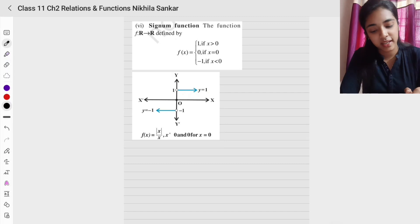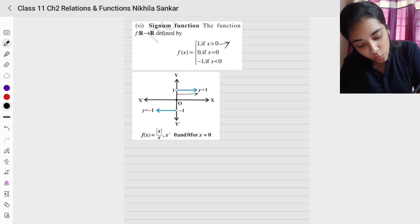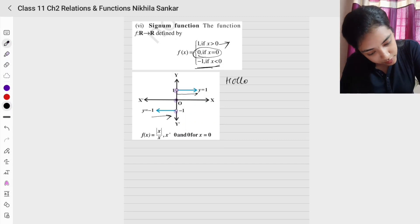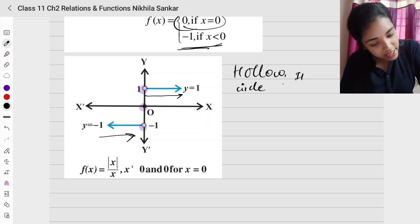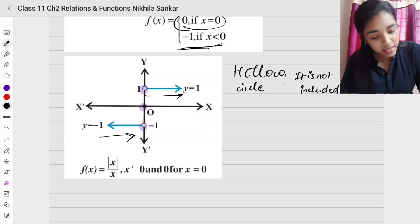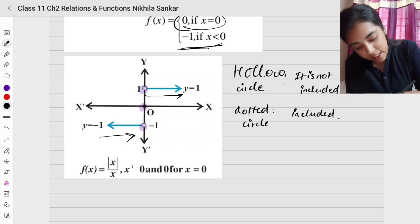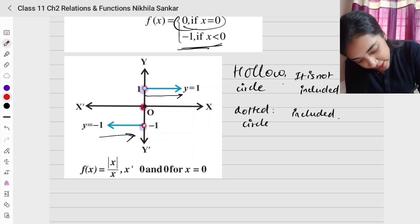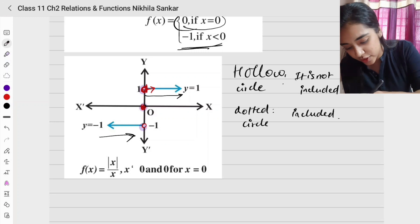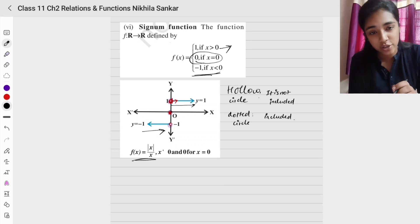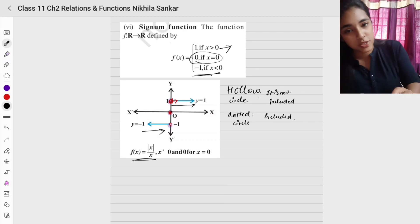The signum function is defined as: f(x) = 1 when x > 0, f(x) = −1 when x < 0, and f(x) = 0 when x = 0. It can also be written as f(x) = |x|/x. On the graph, hollow circles indicate values not included and dotted circles indicate values that are included. So at x = 0 the value is 0, not 1 or −1. The domain is all real numbers and the range is {−1, 0, 1}.